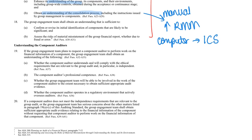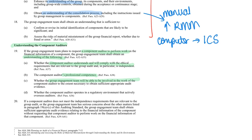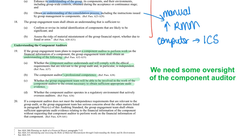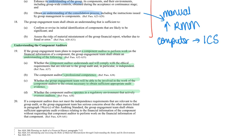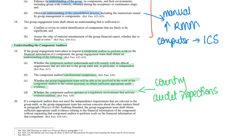You have to set your strategy for the group, but you also have requirements relating to the component auditors. If we ask a component auditor to do some work, I have to understand the following: Will they comply with ethical requirements? Do they have the right skills? Will they be involved so we can ensure there's sufficient appropriate evidence? And do they operate in a regulatory environment that actively oversees auditors? An actively overseen environment would include countries with audit inspections — North Korea, for example, might not have an active process to oversee auditors.